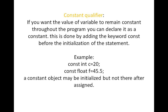Constant qualifiers: if you want the value of a variable to remain constant throughout the program, you can declare it as a constant. This is done by adding the keyword 'const' before the initialization statement. For example: const int c = 20 — here c is a constant integer variable. Another example: const float f = 45.5 — this is a floating-point constant. A constant object may be initialized but not thereafter assigned.